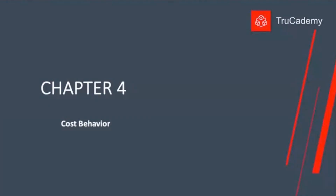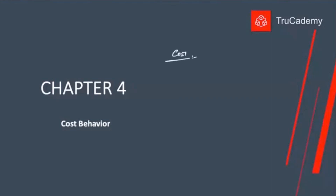Today let's start with Chapter 4, which is about cost behavior. Cost is basically the value of consumption of resources that we use for our production. In our business environment, we can have lots of different types of costs.